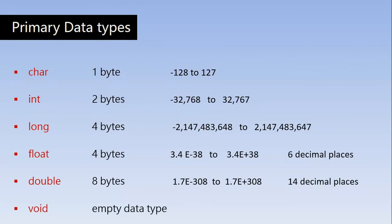There is one more data type called void, which is an empty data type. It is normally used with functions and cannot be used with variables. It represents the return type of a function. Every function in C has to return something to the calling function. If the function returns nothing, we represent that with the keyword void. If the function returns integers, start the function name with the keyword int.